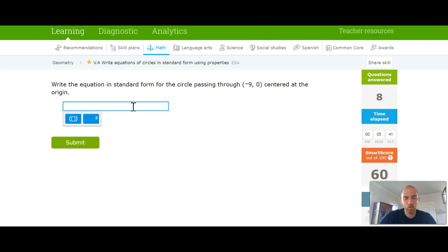Again, here we're centered at the origin. They're trying to throw you off on these. x squared plus y squared is equal to... So we went from negative 9, 0 to 0, 0. So that would give us a radius of 9. 9 squared is 81.